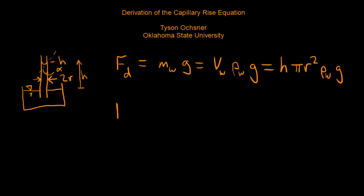We also would like to write an expression for the upward force. The upward force is given by two pi r, that's the circumference where the interface, the liquid-gas interface, is meeting the edges of the tube. So imagine that's a circle with a circumference given by two pi r, times gamma which is the surface tension, times cosine of alpha.